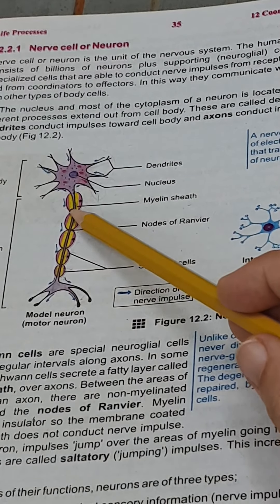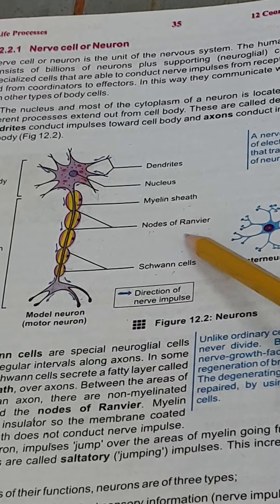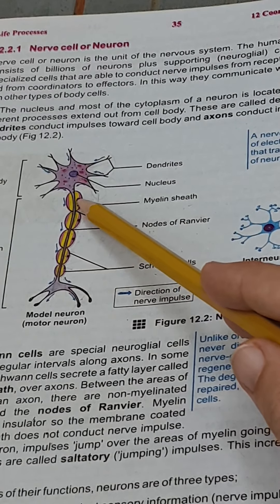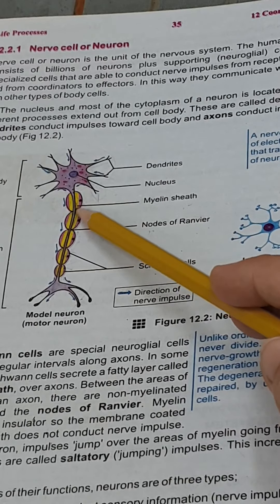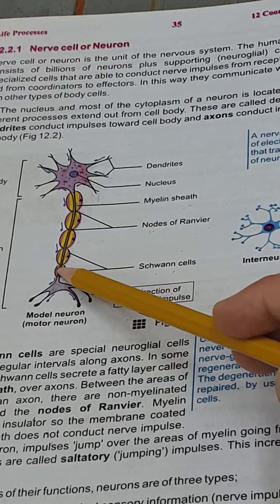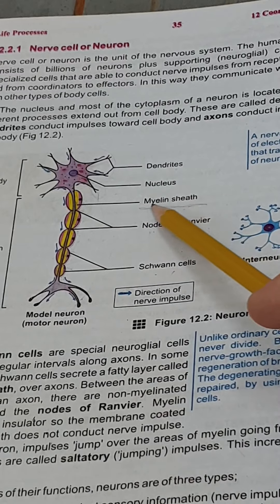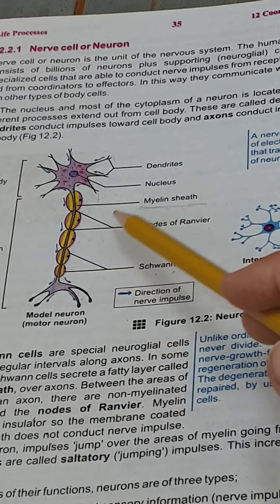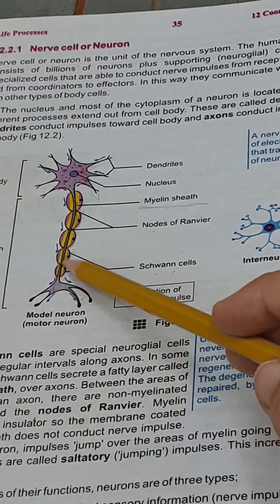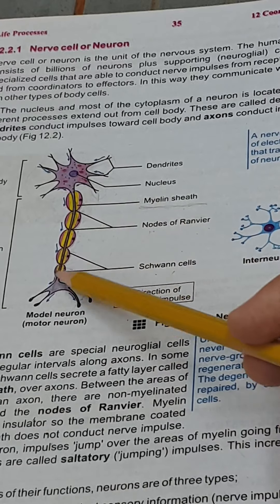The nodes of Ranvier are like the nodes of plants — areas with no lipid layer present. The lipid layer (myelin sheath) is an insulator and does not allow the impulse to pass through it. So when an impulse arises from the cell body, it jumps from one node to the next node. In myelinated neurons, this jumping impulse is known as a saltatory impulse.